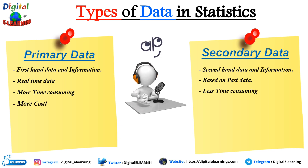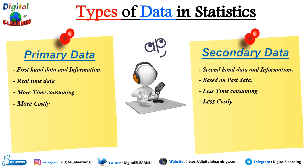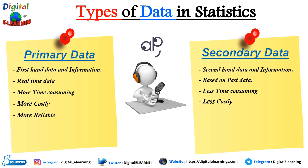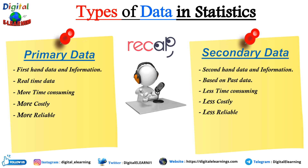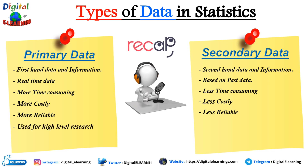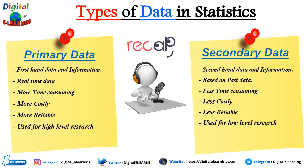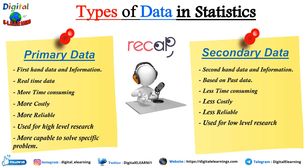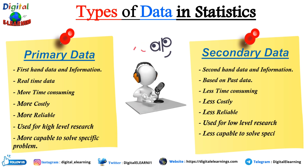Primary data is more costly, while secondary data is less costly. Primary data is more reliable, while secondary data is less reliable. Primary data is used for a high level of research, while secondary data is used for a very low level of research. Primary data is more capable of solving specific problems, while secondary data is less capable of solving specific problems. That covers the high-level differences between primary data and secondary data.